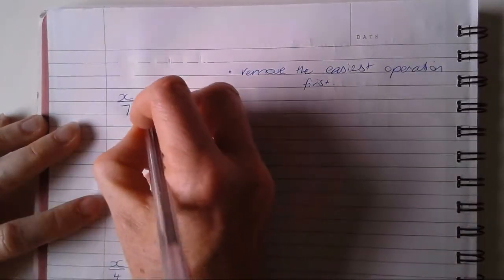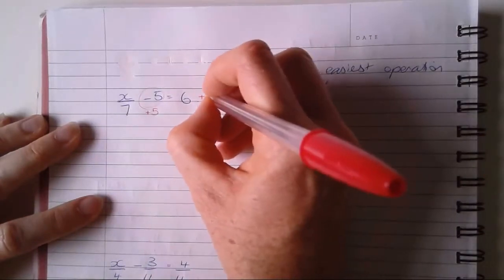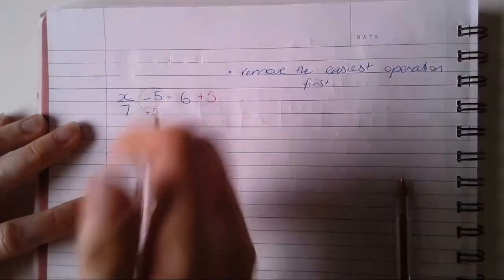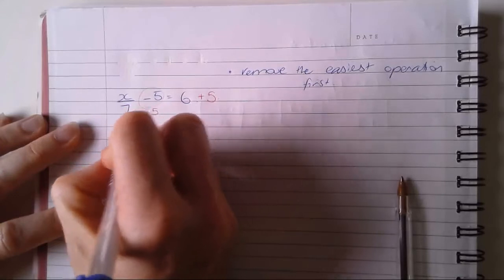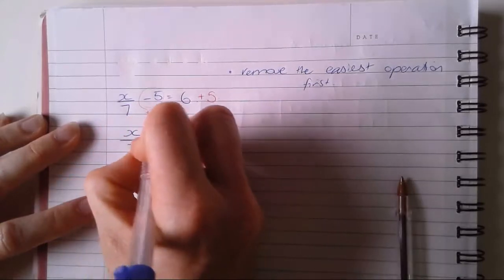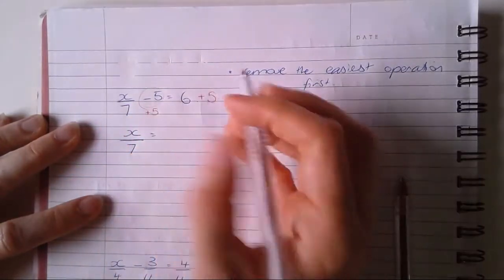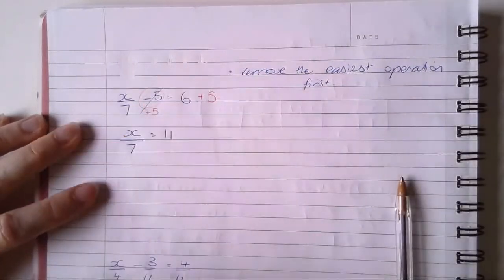To do that, I've got a plus five, because that's the inverse, on both sides. Then I'm going to rewrite my equation. That's very important. Six plus five, and that's no longer there.